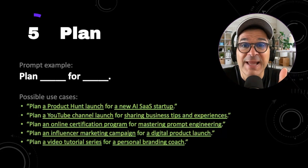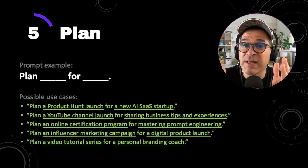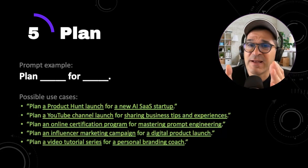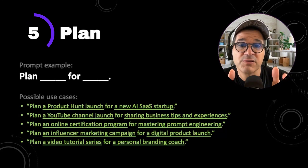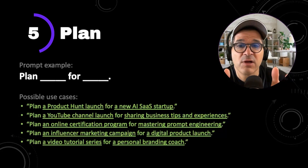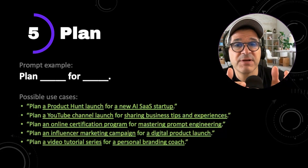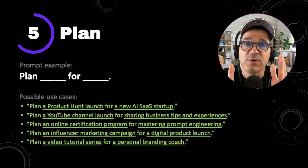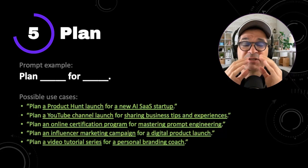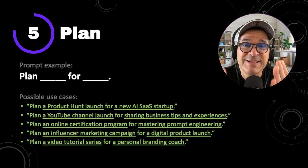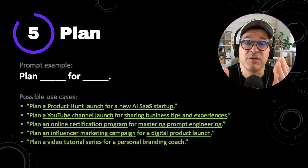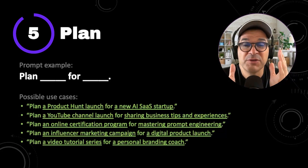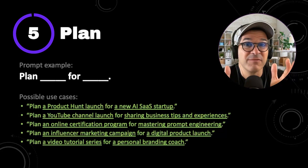Our fifth power prompt is plan. ChatGPT loves to plan things. The prompt example is plan blank for blank — plan event for topic. Some possible use cases: plan a product hunt launch for a new AI SaaS startup, plan a YouTube channel launch for sharing business tips and experiences, or plan a video tutorial series for a personal branding coach. Start your prompt off with the word plan. This is great for generating a detailed step-by-step outline that will help you point out things you may have overlooked. In a future video I'll show you how to combine this one with other prompts to get expert-level results.